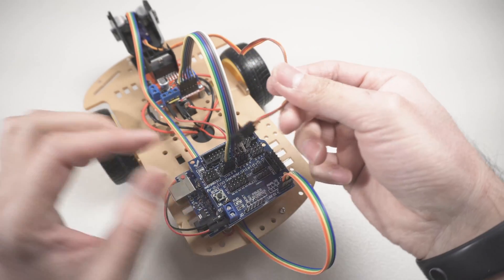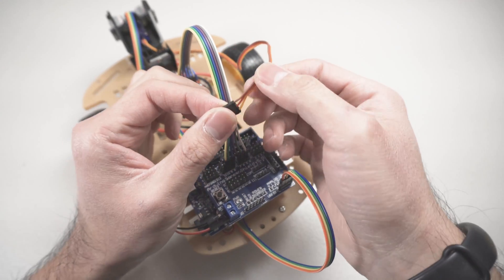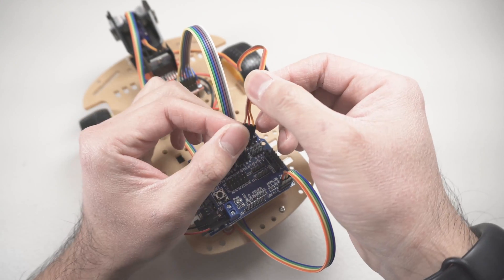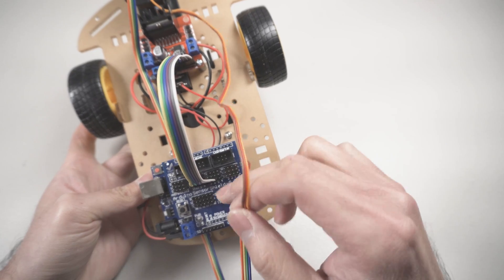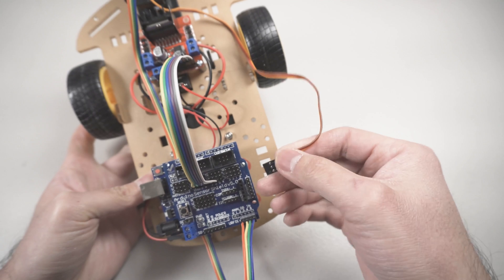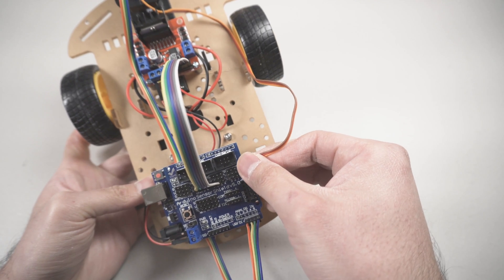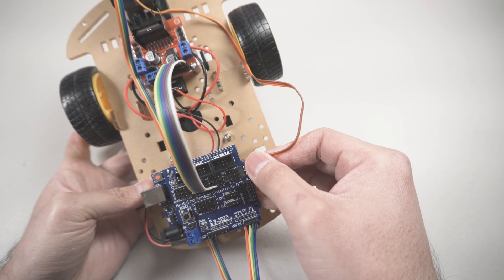For the servo, the brown wire is ground, red for 5V as usual, and orange is for the signals. Any digital pins should work, and we'll just use digital pin 0 as an example.